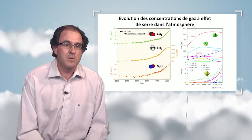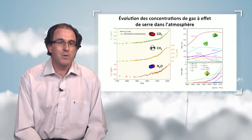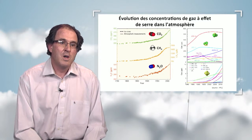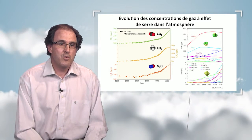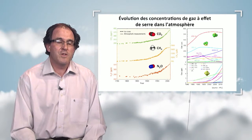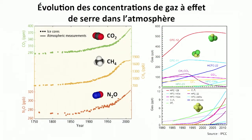Now let us look at the evolution of greenhouse effect compounds other than water vapor: CO₂, methane, and N₂O on the left-hand side. We see that ever since 1750, concentrations have increased, more quickly so in the 20th and 21st centuries. Methane has been multiplied by two, and nitrous oxide has increased by 15%.